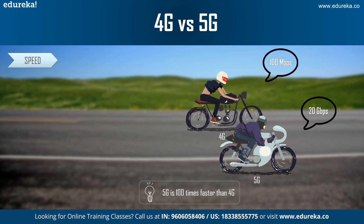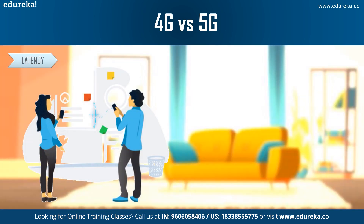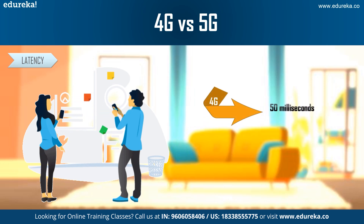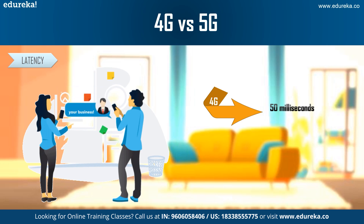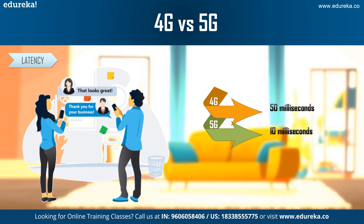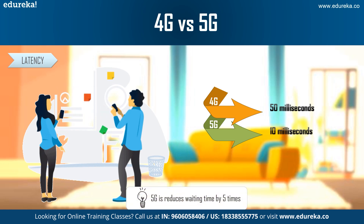With speed comes latency. Network latency is the amount of time it takes for a data packet to go from one place to another — from being sent to being received. The latency in 4G networks is 50 milliseconds on average, and for 5G networks, the theoretical assumption is as low as 1 millisecond. Thus, 5G reduces latency compared to 4G by about 5 times.